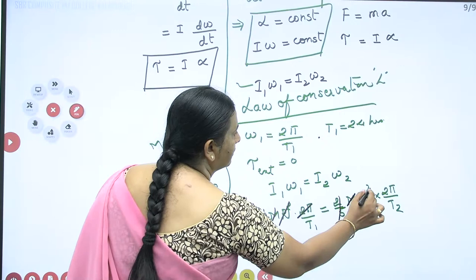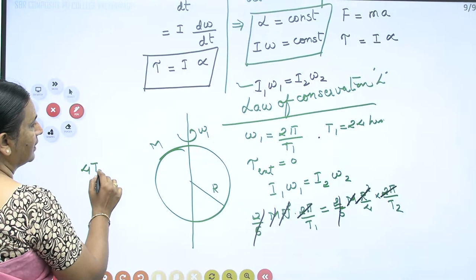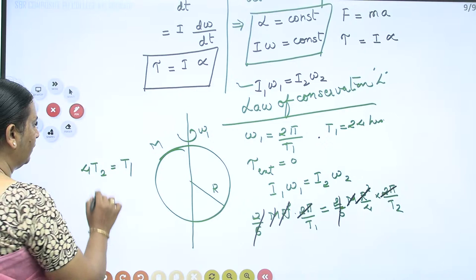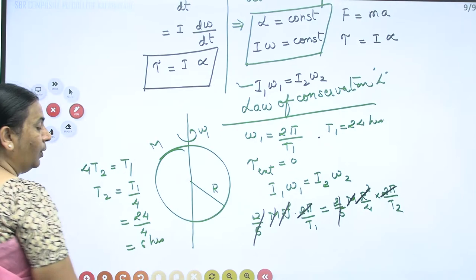What is left is: 4 times T₂ is equal to T₁. Therefore T₂ = T₁/4 = 24 hours / 4. That means the Earth will now complete one rotation within 6 hours.